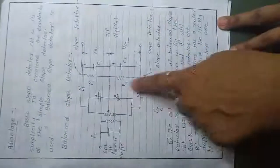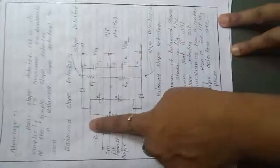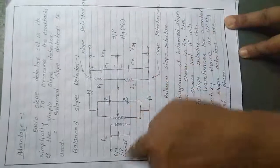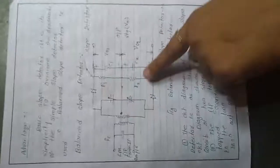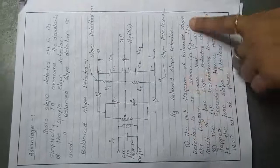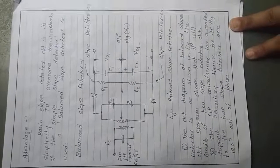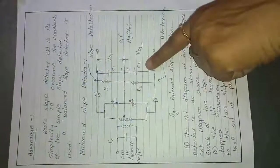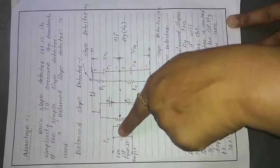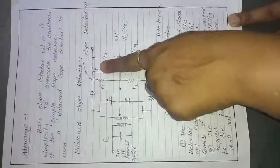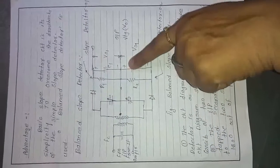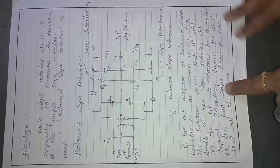For that purpose, we are converting the simple slope detector into the balanced slope detector. The circuit diagram consists of an input transformer with a center tap at the secondary. Hence, the input voltages of the two slope detectors are 180 degrees out of phase. One diode is forward biased and the other diode is forward biased, and whatever output is introduced by simple slope detector 1 and simple slope detector 2, these two outputs are equal and opposite to each other — 180 degrees out of phase.